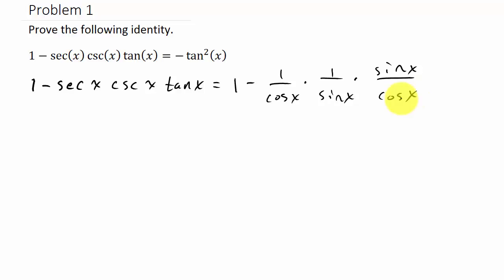If we look at this we can see the sines cancel, which leaves me with one minus one over, and then one over cosine x times one over cosine x, so that's one over cosine squared x.